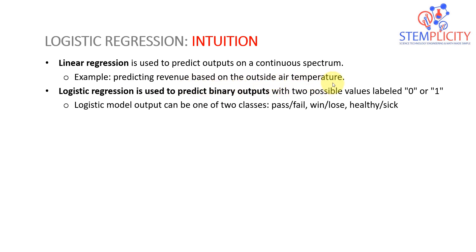If you remember, we had the ice cream stand example. At a temperature of 20 degrees, the daily revenue was around $500. As temperature goes up to 35 degrees C, we were able to increase the revenue to around $700 or $800 daily. We obtained a linear model using linear regression — y equals mx plus b — a straight line.